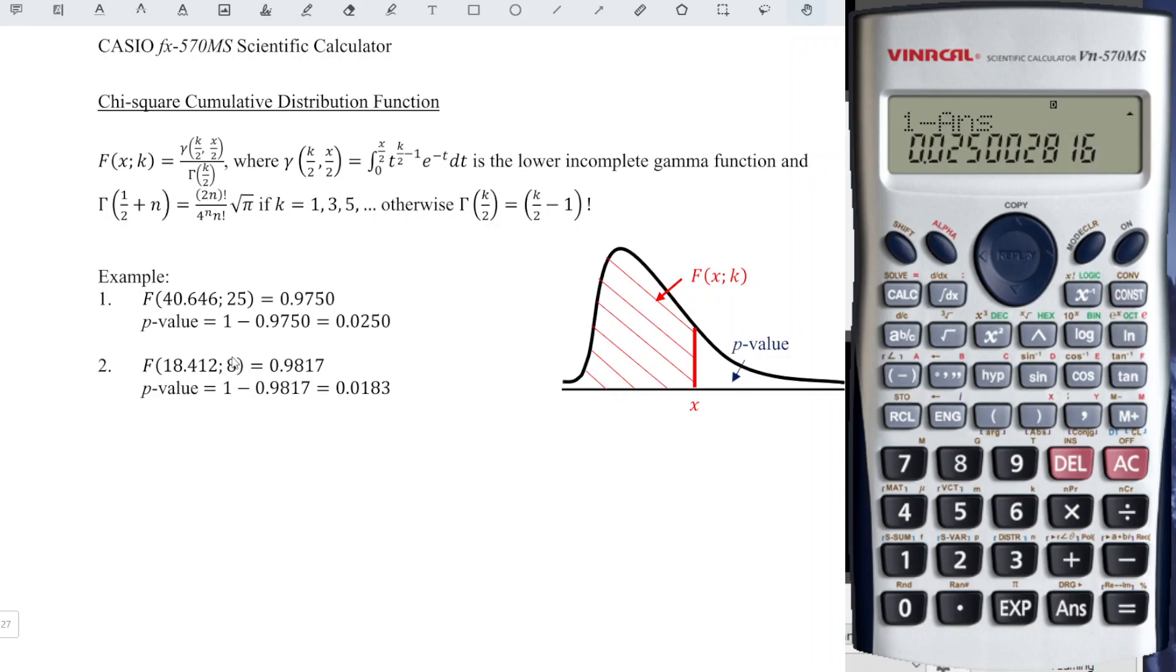Now let's try for even numbers. So also the same, make use of the lower incomplete gamma function. So we make use of the integration function. Now we have alphabet x power again. Bracket is very important.